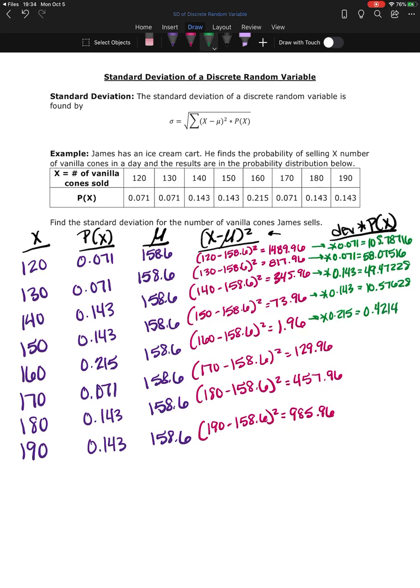129.96 times 0.071 is 9.22716. 457.96 times 0.143 is 65.4388 and finally 985.96 times 0.143 is 140.99228.